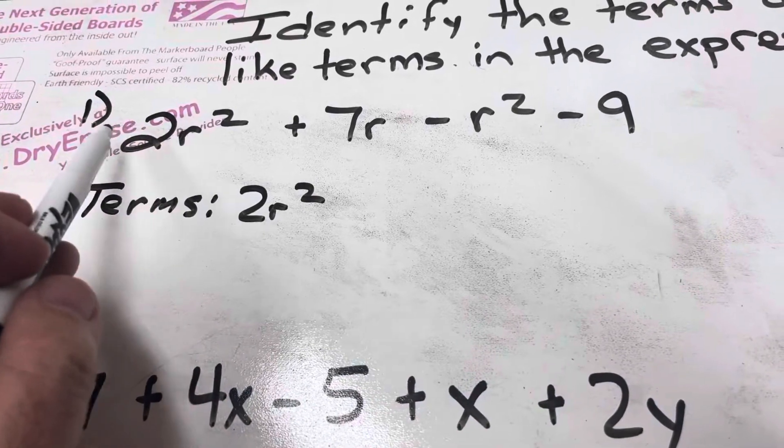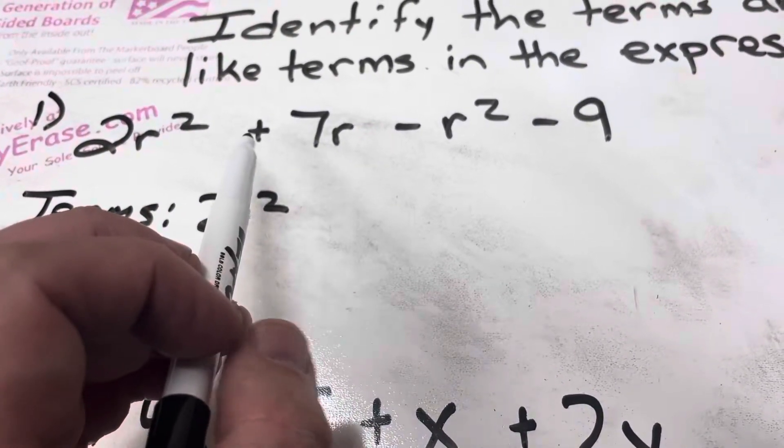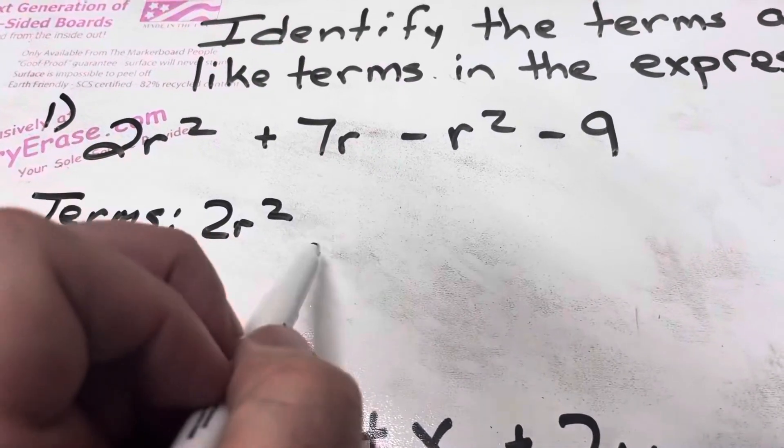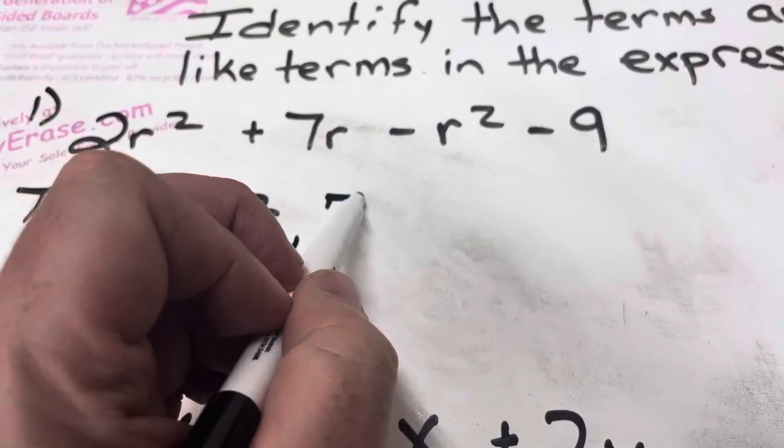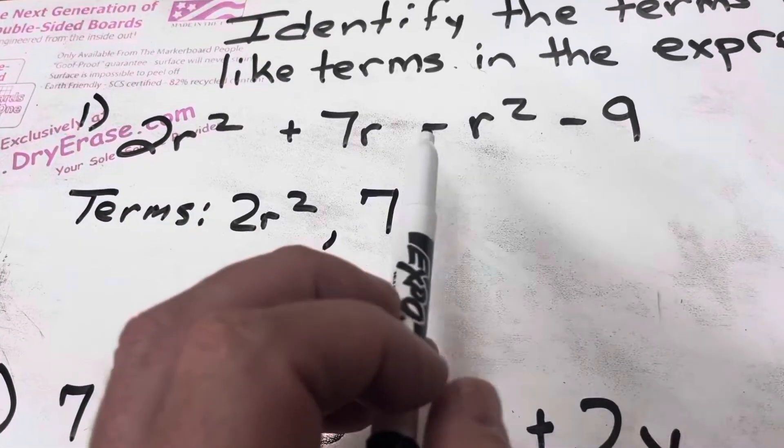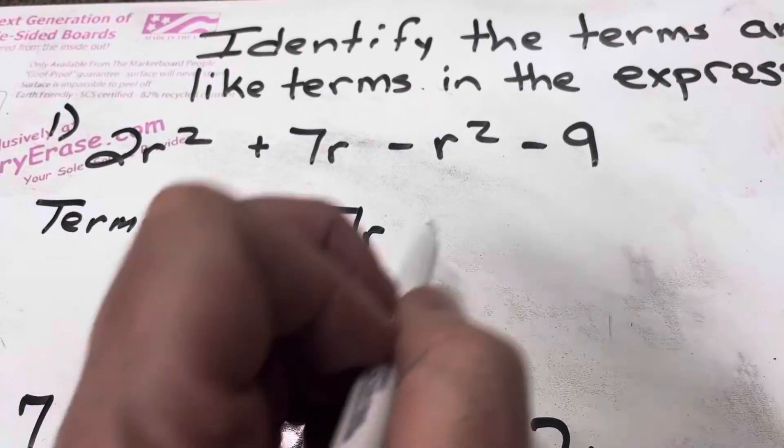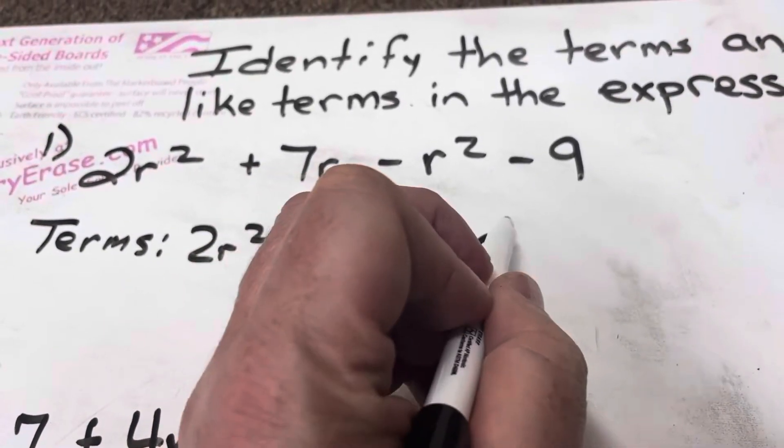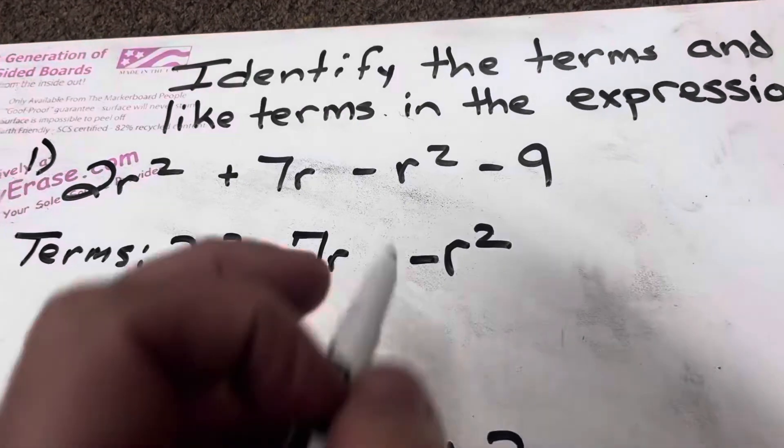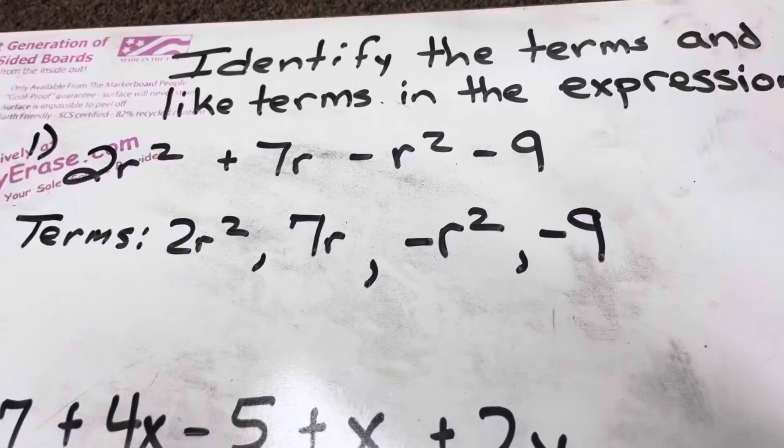It's a positive. There's no negative sign there. Then plus 7r, but remember the addition sign is interchangeable with the positive sign. So it's a positive 7r. Then it's a minus r squared, so my term is a negative r squared. And then my term is a negative 9.